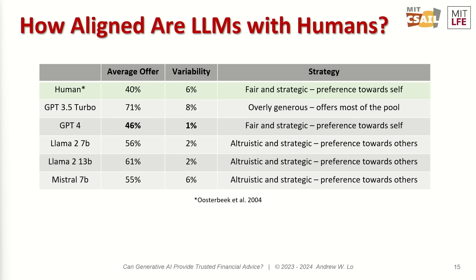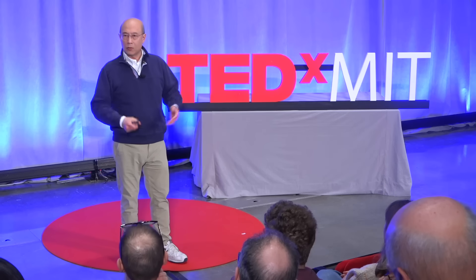How do large language models behave in the ultimatum game? It turns out most humans offer about 40% of the split, and that's usually enough to get agreement. Large language models — not all of them are there yet, but some of them are. Through many examples like this, we can map out the behavior of large language models and compare them to how humans engage. This will ultimately allow us to shape large language models to be fully trustworthy — much like people learn the golden rule on the playground.